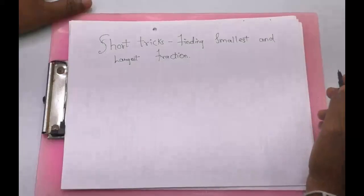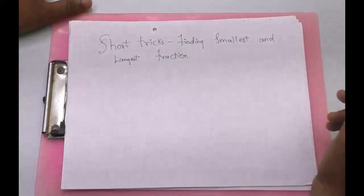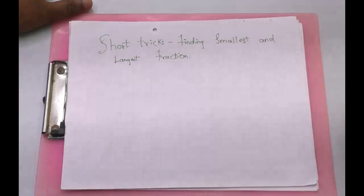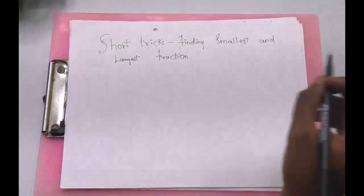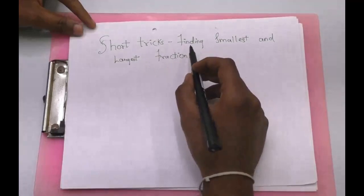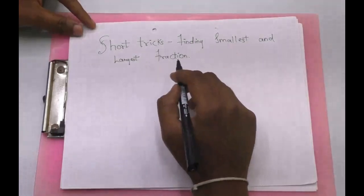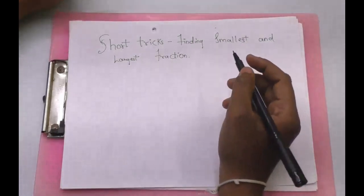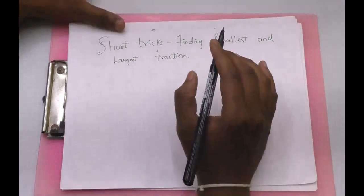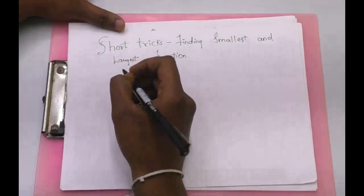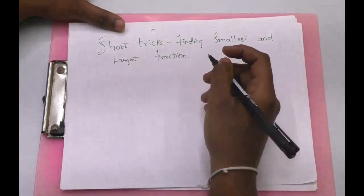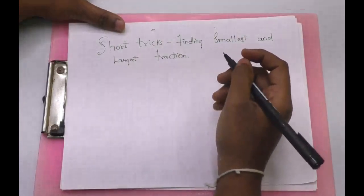Welcome to our YouTube channel A.S.A. Young A.S. In this series of short tricks, we will cover short tricks for most expected, tough and time-consuming questions. Today's topic is short tricks for finding smallest and largest fractions. This type of question is most expected in all competitions for SSC-CGL, RRB, CGSL, etc. Let's get started.